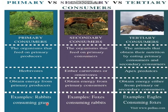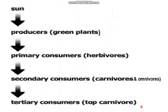For example, rabbits consuming grass is a primary consumer eating producers. Foxes consuming rabbits is a secondary consumer eating a primary consumer. Eagles consuming foxes is a tertiary consumer eating a secondary consumer. Tertiary consumers can also eat primary consumers directly. That's the difference between them.